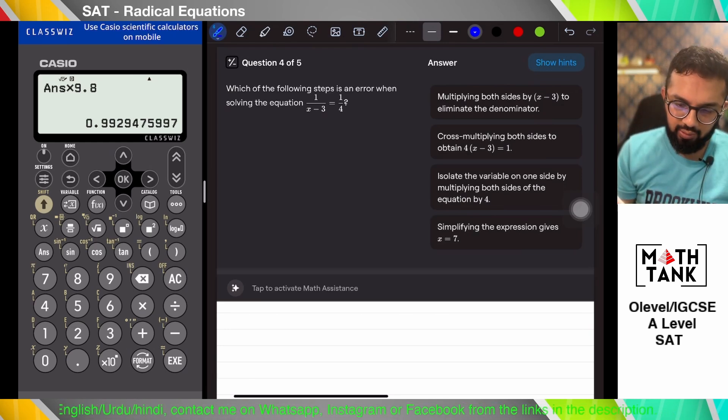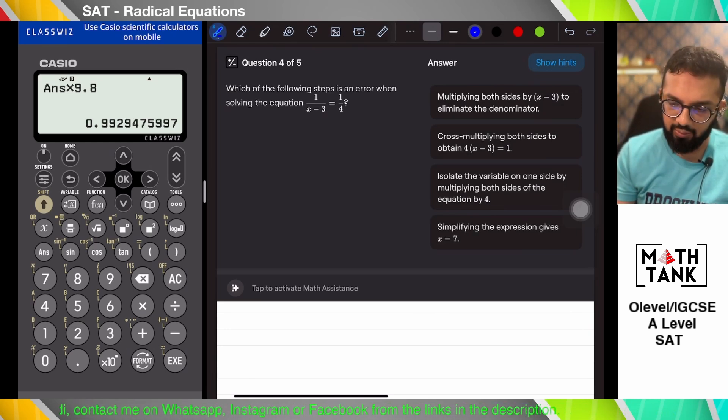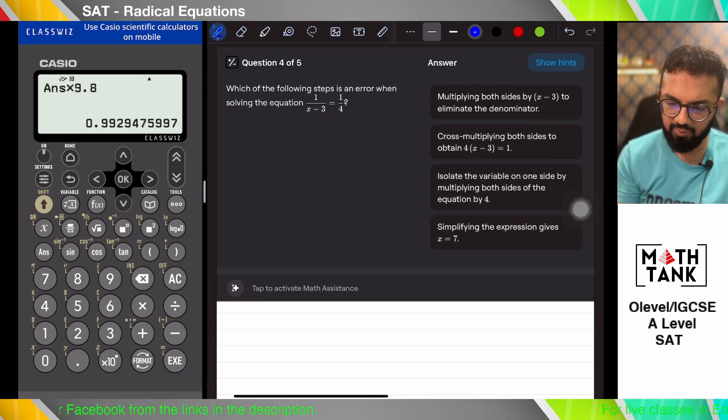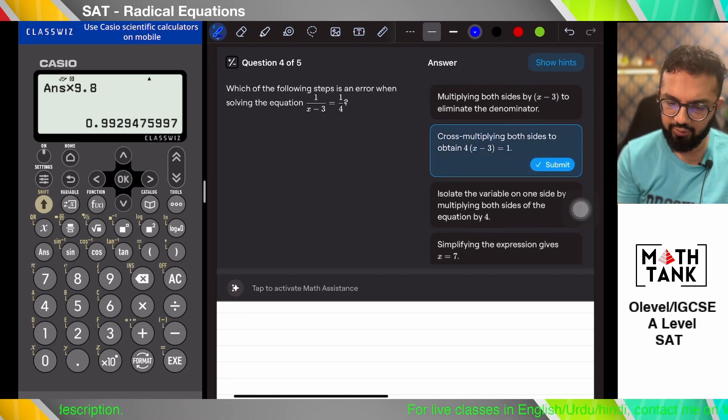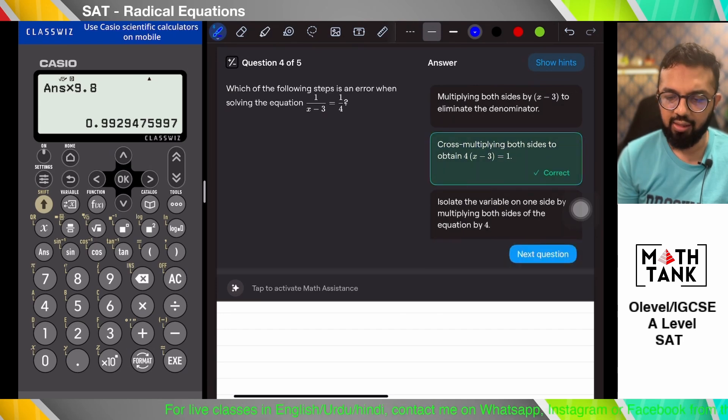Okay, which of the following is an error when solving these equations? Multiplying both sides by x minus 3 to eliminate the denominator. Yes, that's fine. Cross multiplying both sides to obtain. No, this is wrong because when 4 gets cross multiplied, it's going to multiply with 1. This is an error.